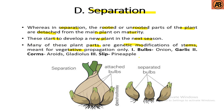Separation may be classified into three types: first, bulbs — example onion and garlic; second, corms — example aroids and gladiolas; and third, slips — example pineapple. Here in the picture we can see the figure of onion with attached bulbs, and in the next picture the bulbs grow independently — this is called separation.